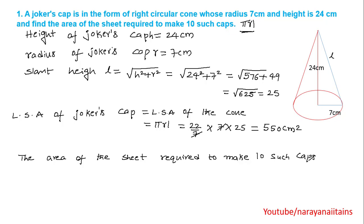That is 10 × 550 cm². 10 into 550 means 5400 cm².